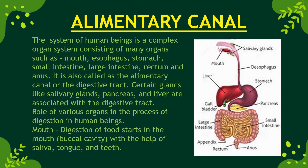The alimentary canal is where the whole process of digestion takes place. It includes the mouth, esophagus, stomach, liver, pancreas, small intestine, large intestine, appendix, rectum, and anus. This is a complex organ system. Associated glands include the salivary glands, pancreas, and liver. We will now look at the role of each organ in digestion in human beings.